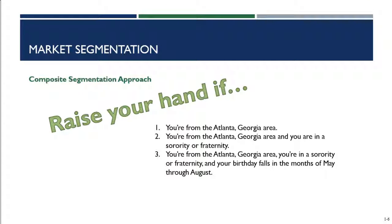For example, raise your hand if you're from the Atlanta, Georgia area. Keep your hand up if you're from Atlanta, Georgia and you're in a sorority or fraternity — our numbers just got smaller. Now keep your hand up if you're from Atlanta, Georgia, you're in a sorority or fraternity, and your birthday falls in the months of May to August. We should probably have about two or three people left. What three segmentation variables did we use? If you said geographic, psychographic, and demographic, you are correct.